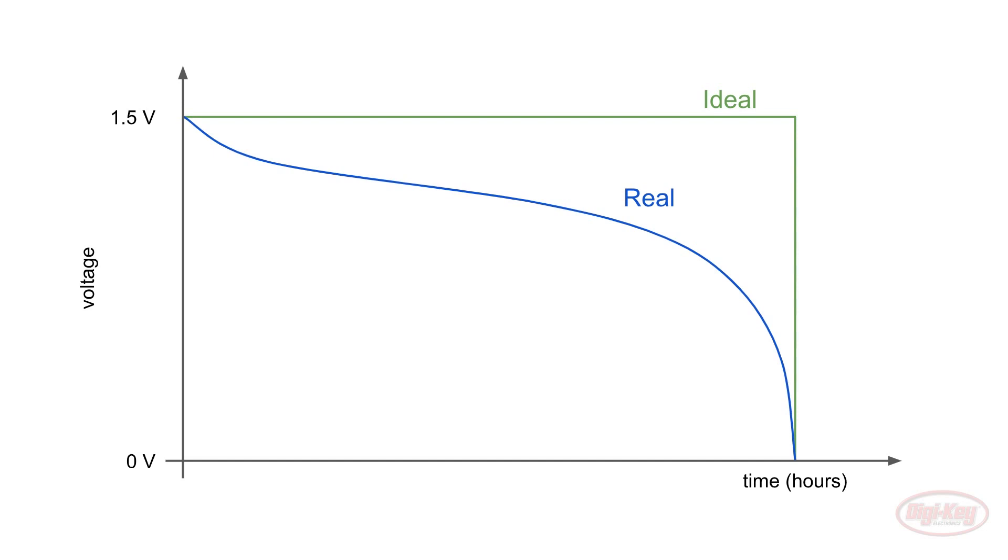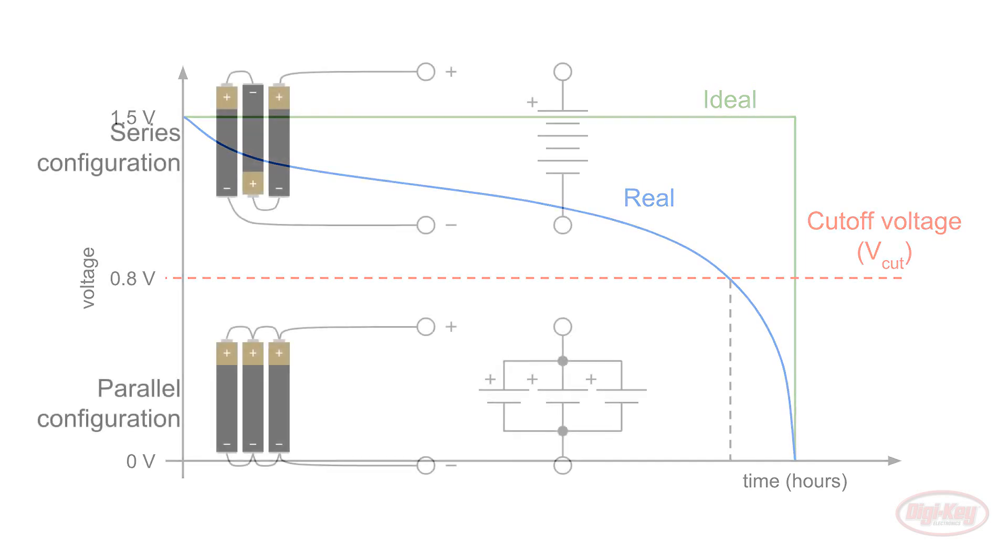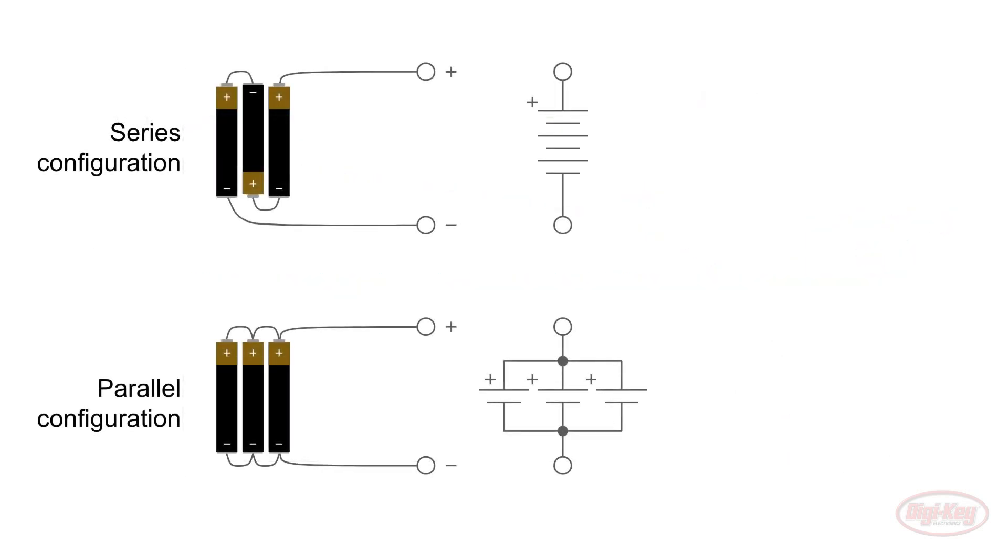Also, most consumer electronics can't operate below a certain voltage. This is known as a cutoff voltage, which we'll call V-cut. A well-designed product will operate down to 0.8 volts per alkaline cell and then stop there. If you look at where the cutoff voltage intersects the real discharge curve, you'll see that batteries actually last less time than if they followed the ideal curve.